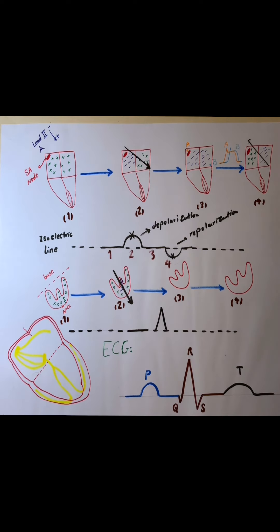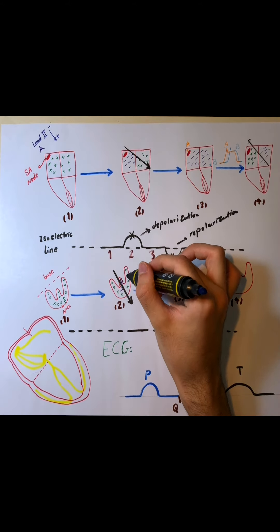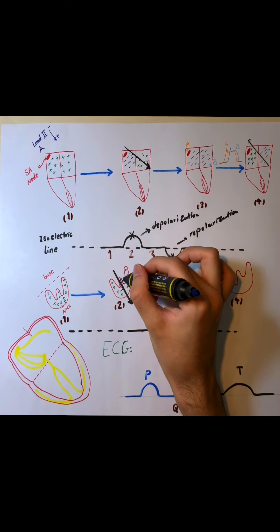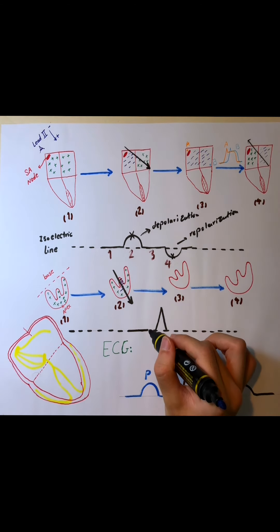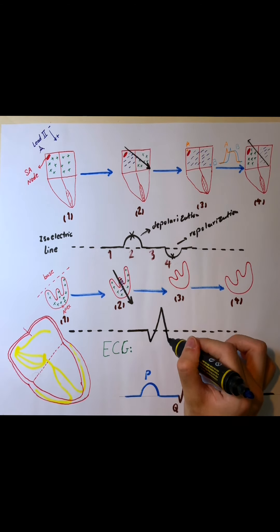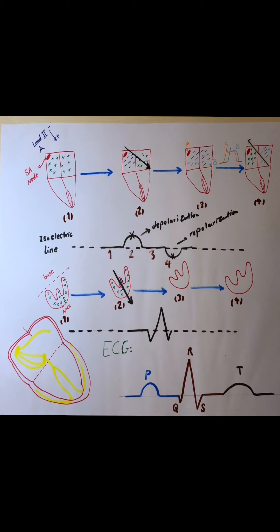Remember that at the beginning and at the end of this positive wave — the R wave — the electric vector is just against Lead 2 and not in the same direction. For example, at the end of the depolarization, our vector is in this direction, so it will be a negative wave. So here we have two negative waves at the beginning and at the end of the depolarization of our ventricles.